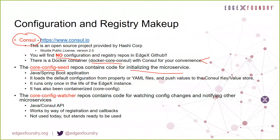We also have another application called the core config watcher. This is a wrapper application around some of the Consul libraries and functions, available to use in our microservices for watching configuration changes and notifying other microservices. It's a Java Consul API application that allows clients to register interest in particular configuration changes and receive callbacks or notifications when configuration has changed. We have it ready to be used and dockerized, but we haven't actually used it yet — there are plenty of places it could and maybe should be used.